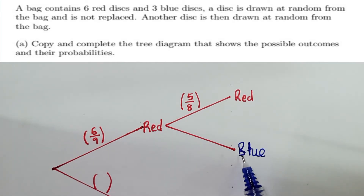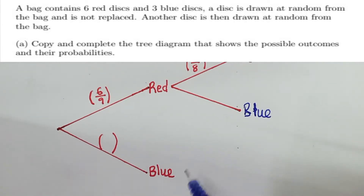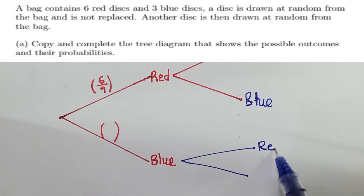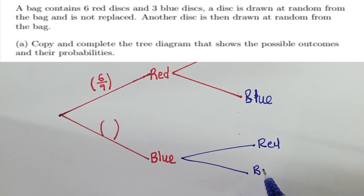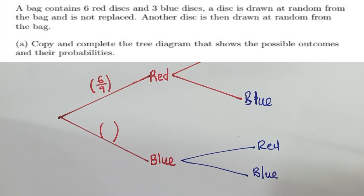Because we have a red and blue here. Also down here to finish it like this, we shall have a red and a blue here. So these were the remaining parts. Now the other thing is to put the probabilities.